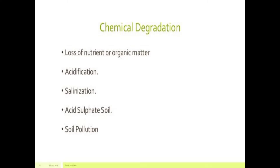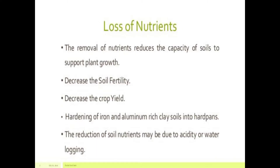In the case of chemical degradation, the points are: loss of nutrient or organic matter, acidification, salinization, acid sulfate soil, and soil pollution. Regarding loss of nutrients — the removal of nutrients reduces the capacity of soil to support plant growth, decreasing soil fertility and crop yield. Hardening of iron and aluminum-rich clay soil into hardpan can occur. The reduction of soil nutrients may be due to acidity or waterlogging; excess water increases soil acidity and nutrients are lost.